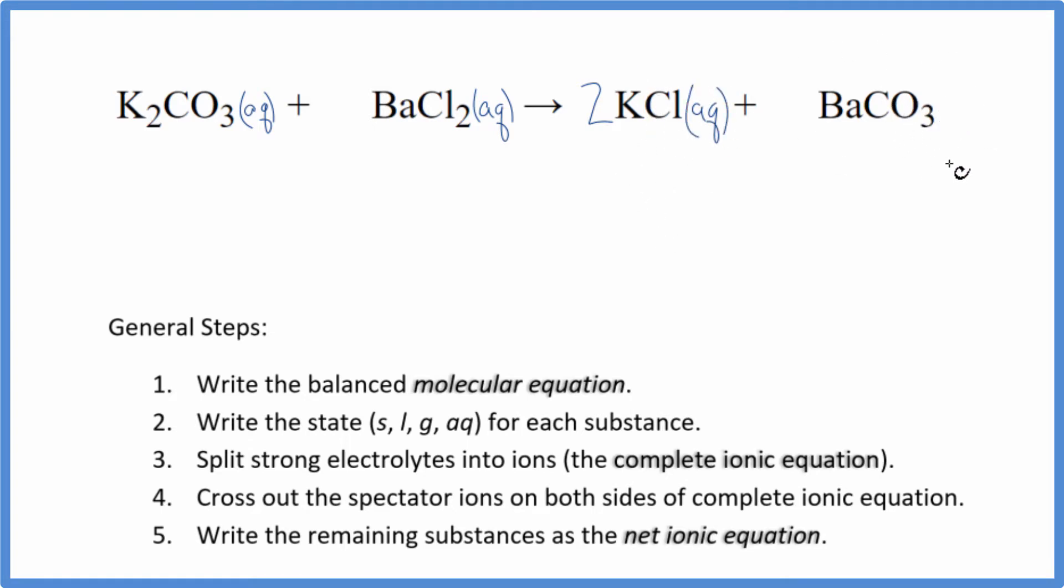And then barium carbonate. Carbonates are often insoluble, except for group one carbonates like potassium or sodium. So barium carbonate here is insoluble. That means it's not going to dissolve. It's going to be a solid. When these react, falls to the bottom of the test tube in a precipitation reaction. So we have our states.